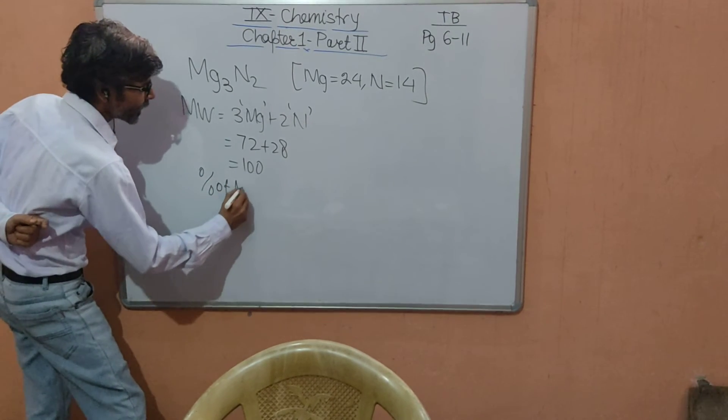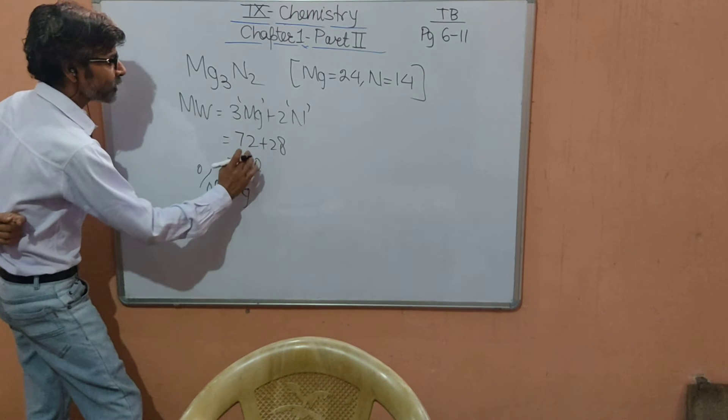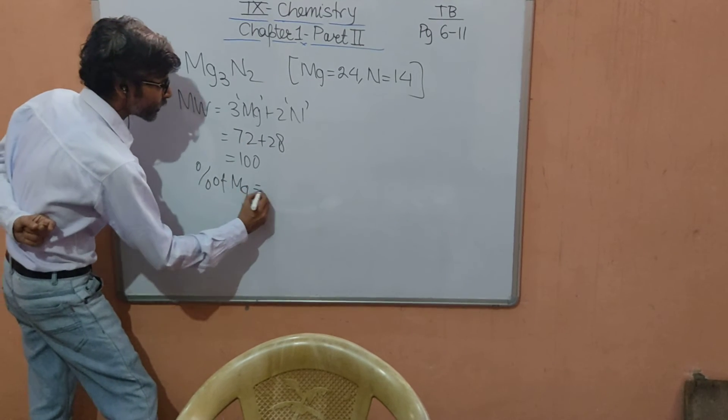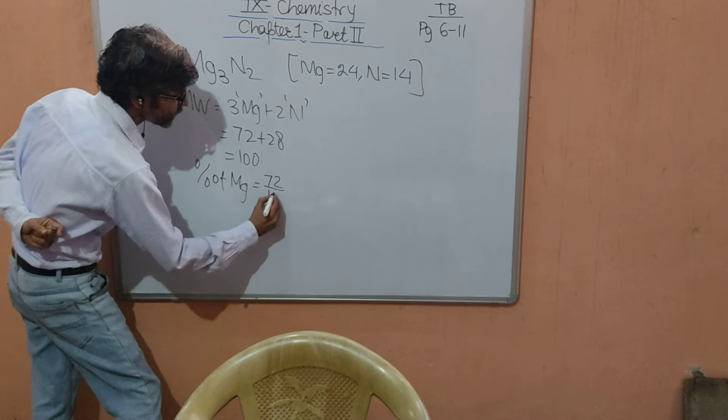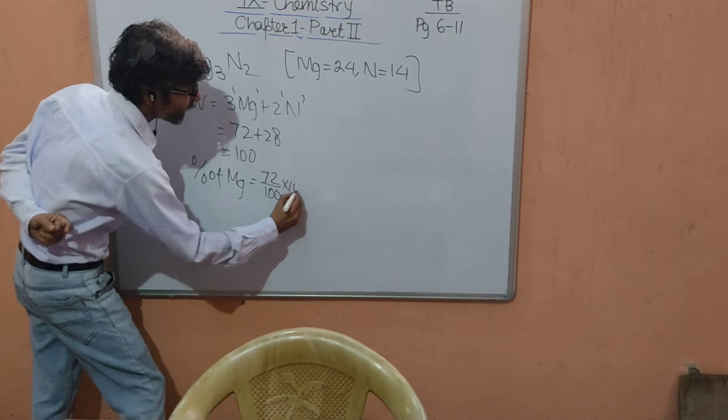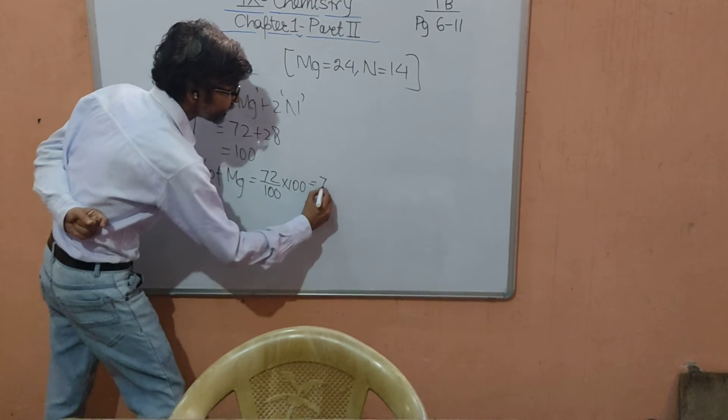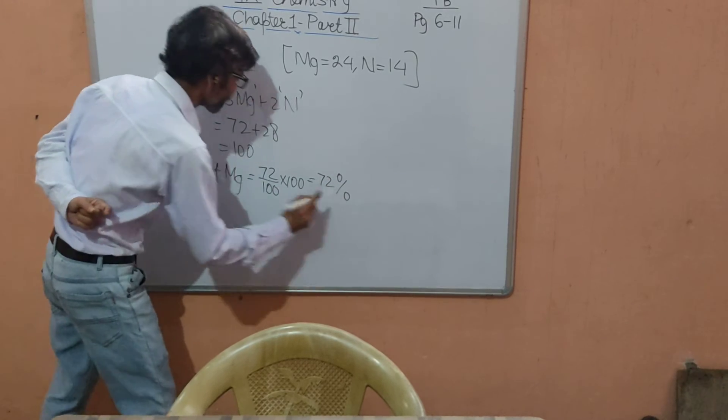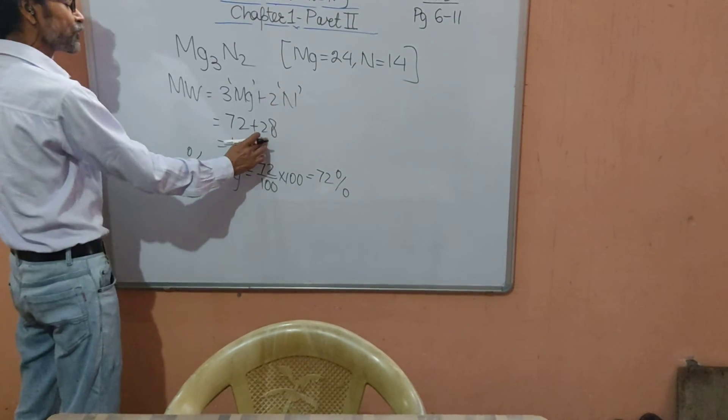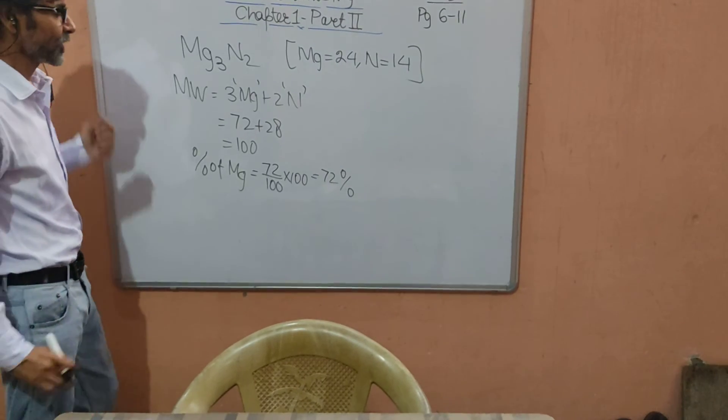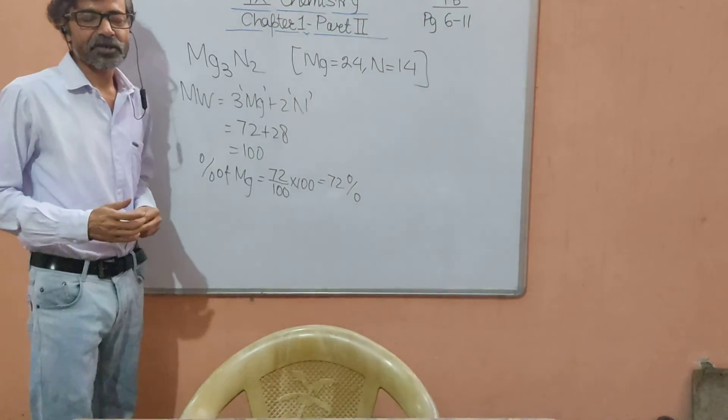So percentage of magnesium: here you have to be careful. The total weight of magnesium is 72, so of course you will take 72 upon 100 and then multiply by 100. You will get 72 percent. In the same way you can get the percentage of nitrogen also, 28 percent.